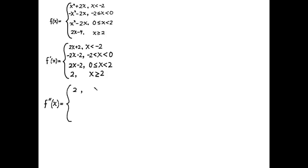The next thing I want to do is find the second derivative, differentiating each piece of the first derivative and deciding whether to include the equal signs. All the equal signs go away now because the second derivative is discontinuous at all three junction points.